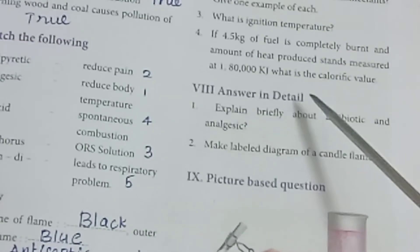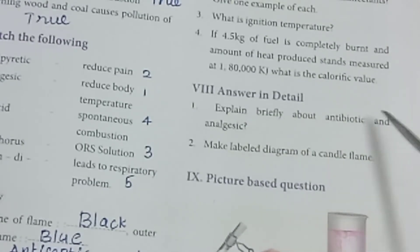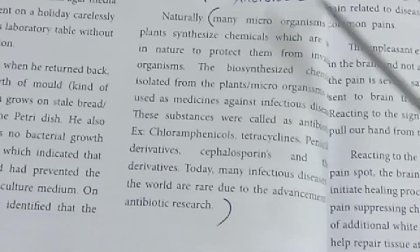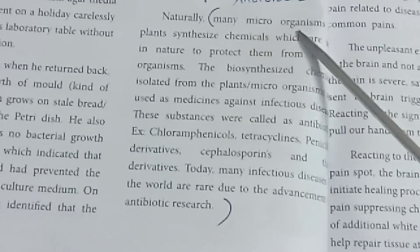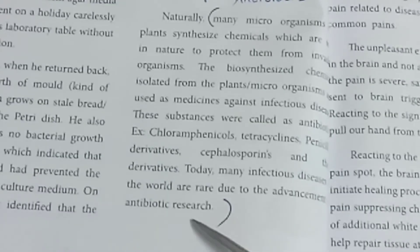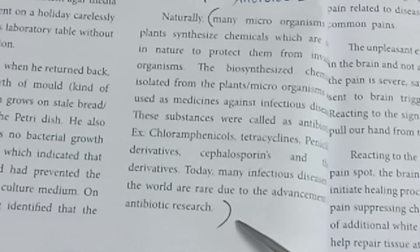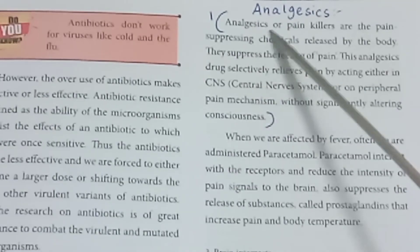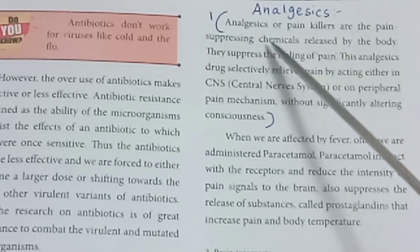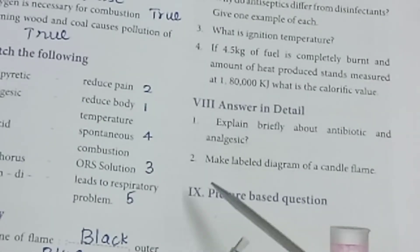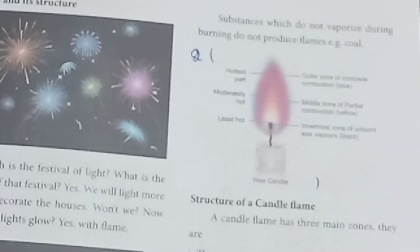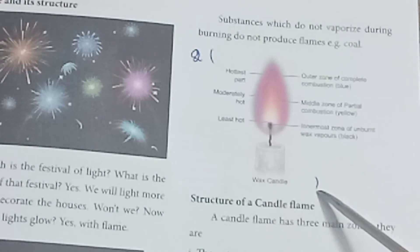Roman numeral 8: answer in detail. First: Explain briefly about antibiotics and analgesics — refer to page 68 for antibiotics and page 69 for analgesics. Second: Make a labelled diagram of a candle flame — refer to page 73 for the diagram.